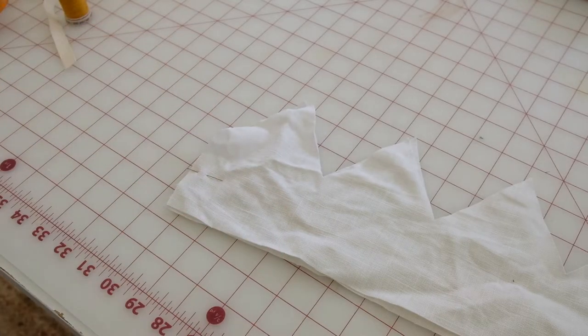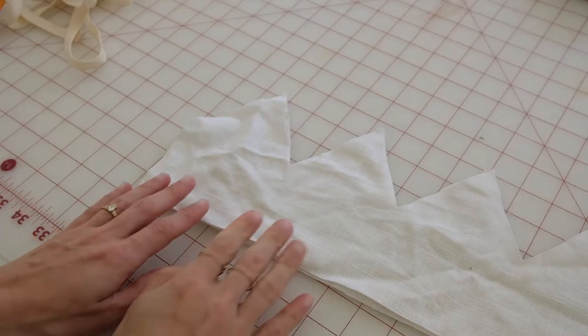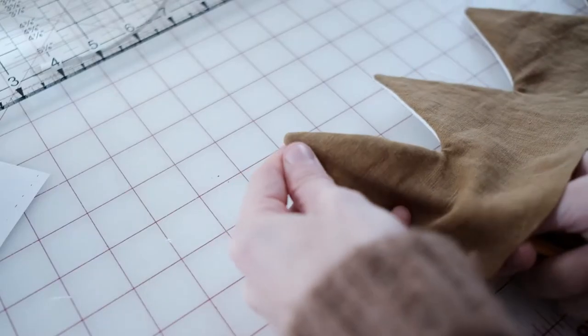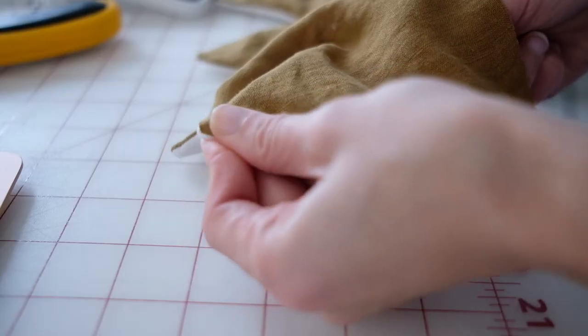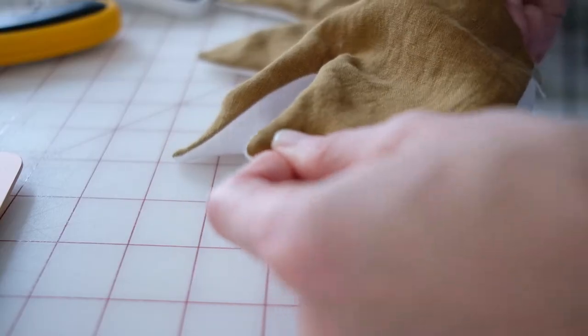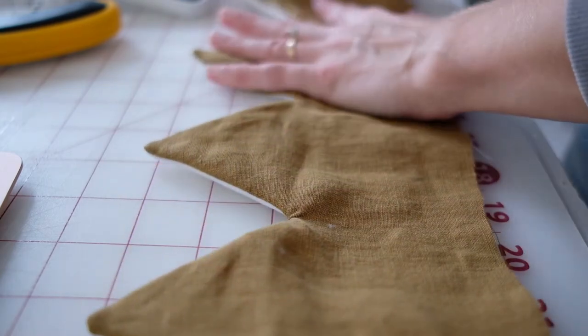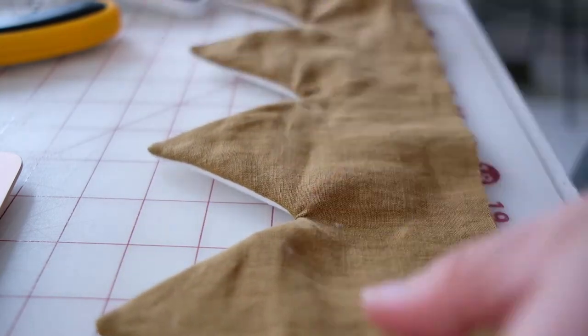Pin this in place and then you will sew up on this side and then go around the points. Cut an angle at the top of each point. This will help the points be more prominent. Turn your crown right side out and use a sharp object to point out the tops of the crown.